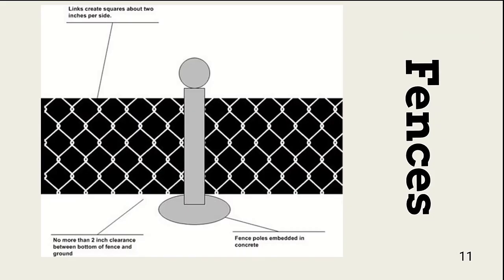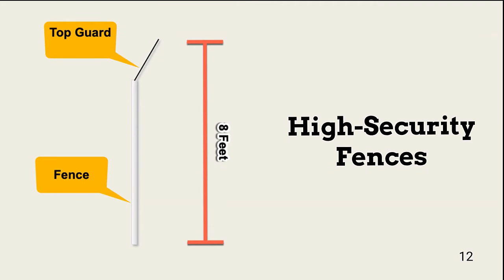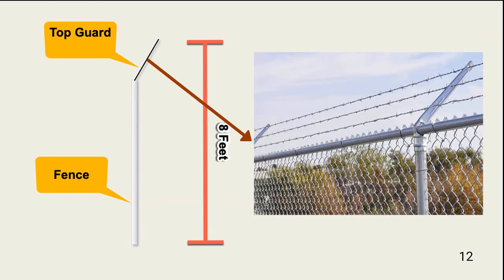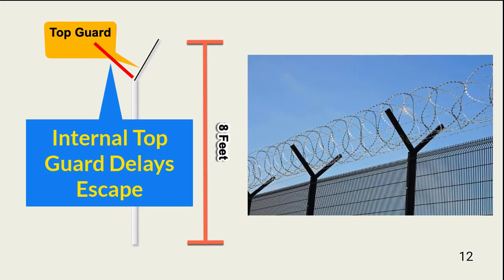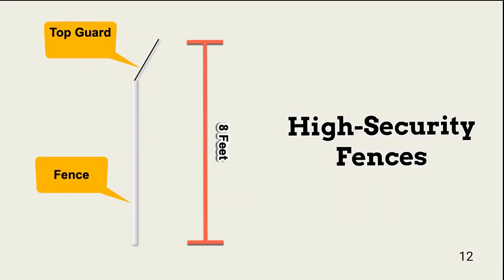Fences are a common site barrier and a good solution when appearance and visual blocking are not important considerations. The basic requirements for fencing to deter moderately motivated intruders include: mesh length of about two inches on a side, no more than a two-inch gap between the fence and the ground, and fence posts embedded in concrete. Wall height recommendations also apply to fences. Placing a top guard on a wall or fence is needed for a high security perimeter. A top guard consists of strands of barbed or razor wire extending outward at 45 degrees, adding about one foot to the height. A second top guard can extend inward to deter the escape of an intruder. The combination of top guard and fence should reach at least eight feet.